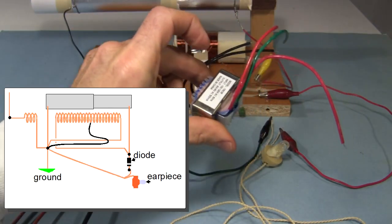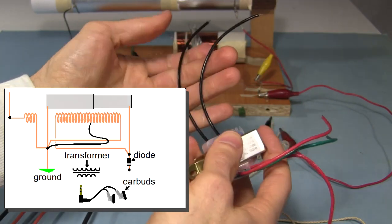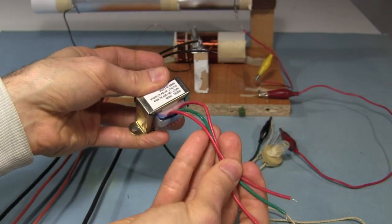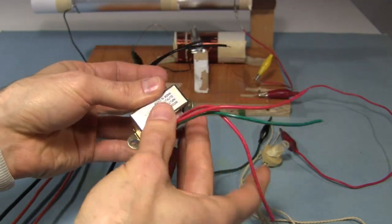You're going to need a transformer. And what will happen is one side of the transformer will connect to the crystal radio and the other side of the transformer will connect to the earbuds. Which side goes where?